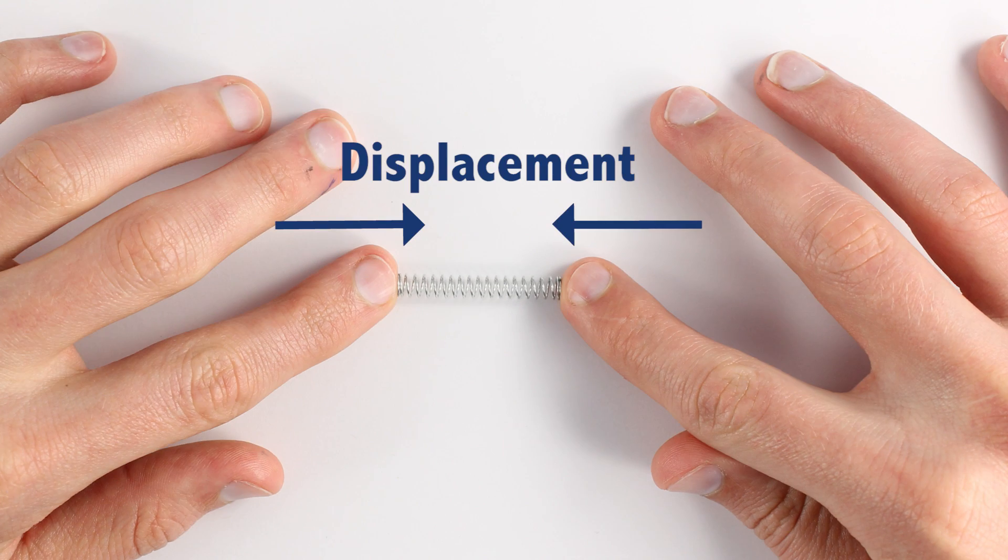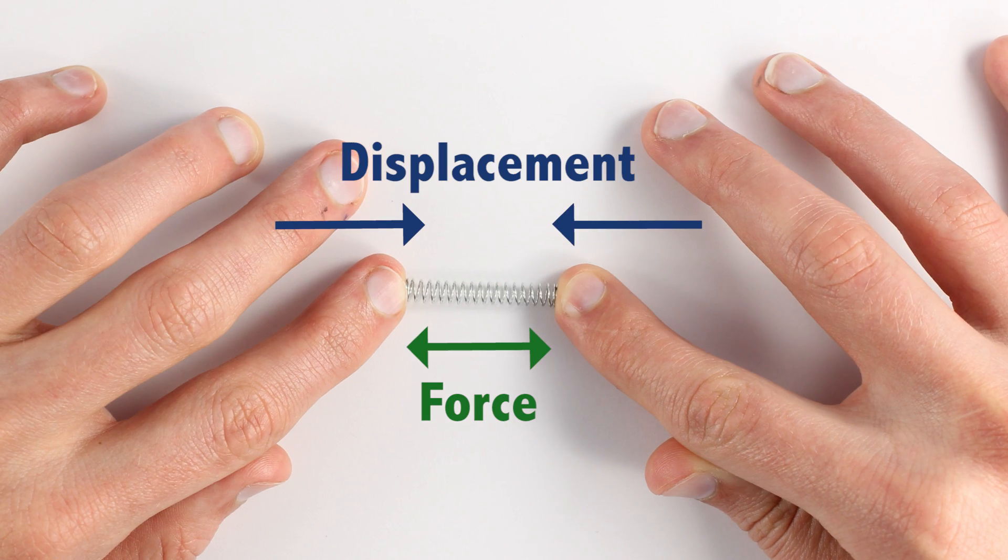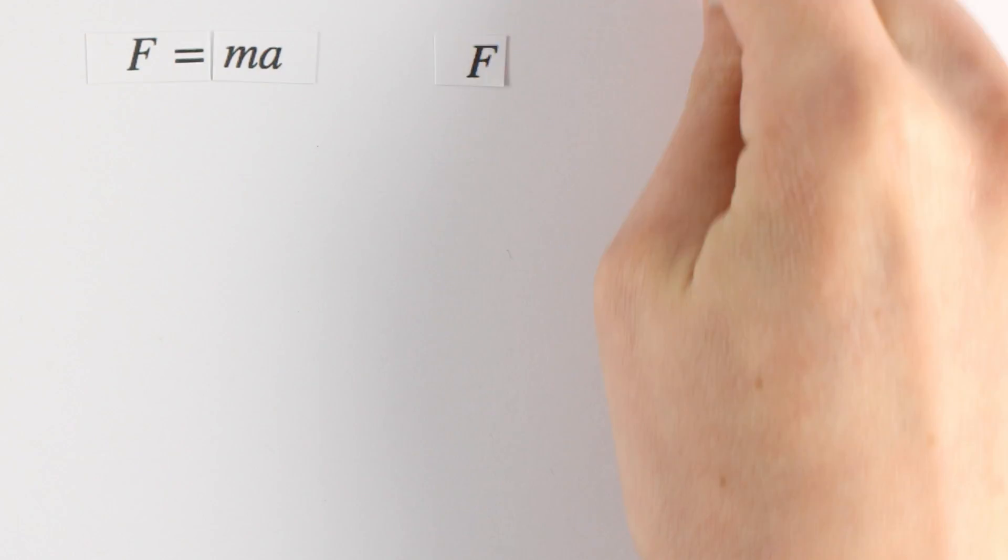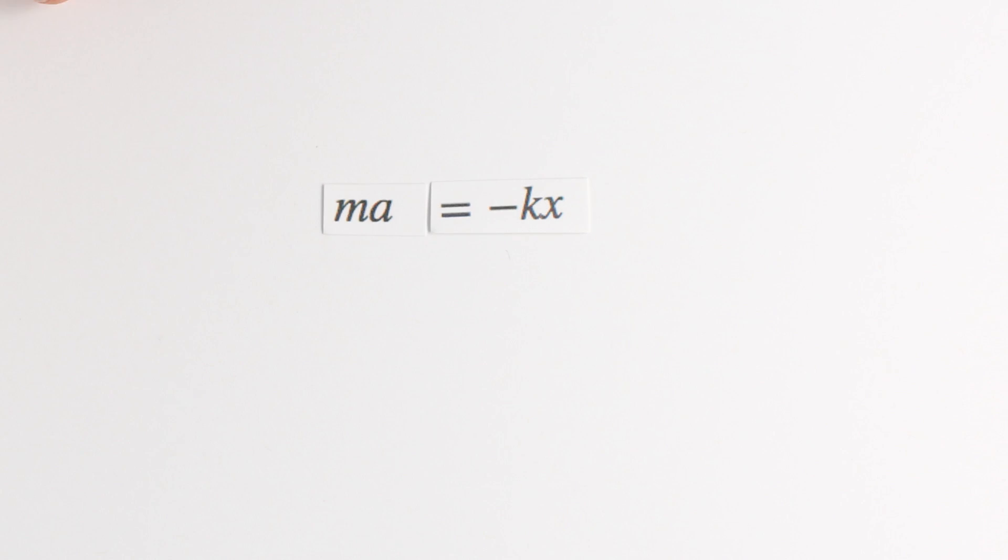The minus sign is a result of the force of the spring opposing our motion. The spring always pushes or pulls against us. Now that we have two equations, let's do the sensible thing here and put them together.